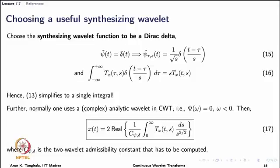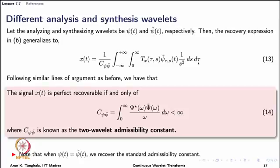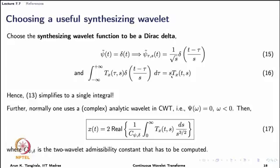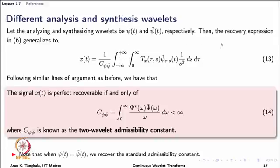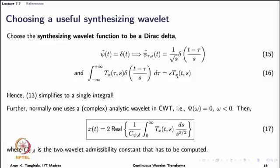When we plug in the Dirac expression for ψ̃ into the synthesis equation, the integral across dτ simplifies, and the double integral reduces to a simple single integral over scales. That is the basic idea. Normally one uses a complex analytic wavelet in CWT. Using a Dirac as the synthesizing wavelet lets us reduce a double integral to a single integral and reduce the computational burden.